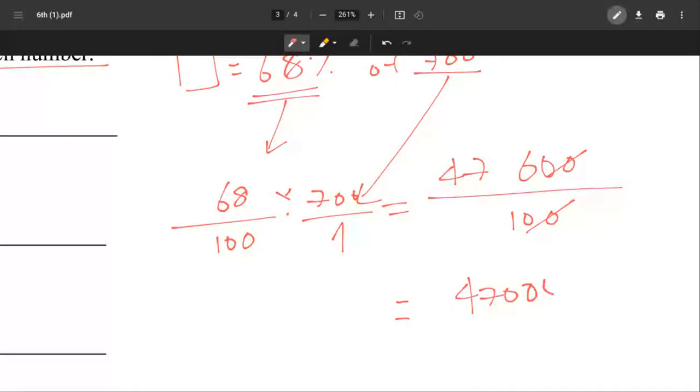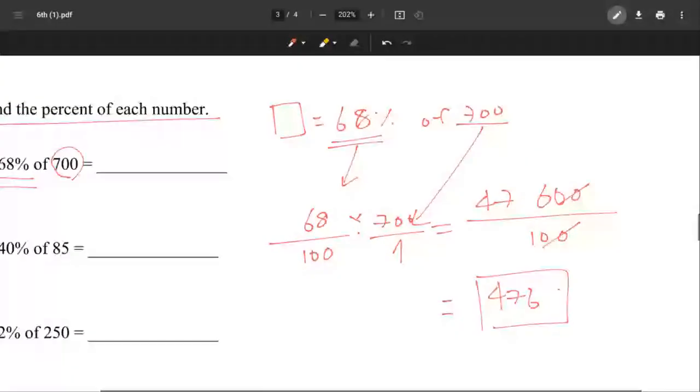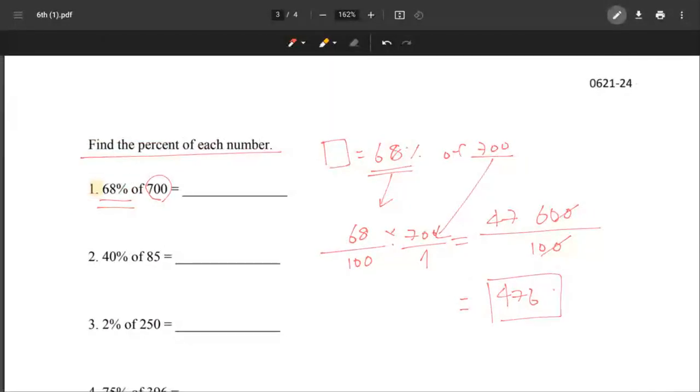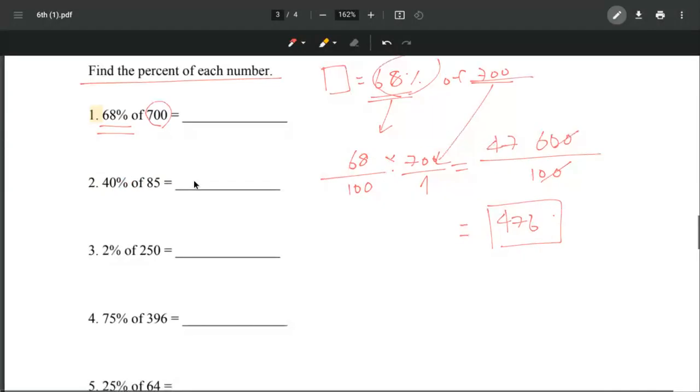Our final answer is going to be 476. So 476 would be the 68% of 700.